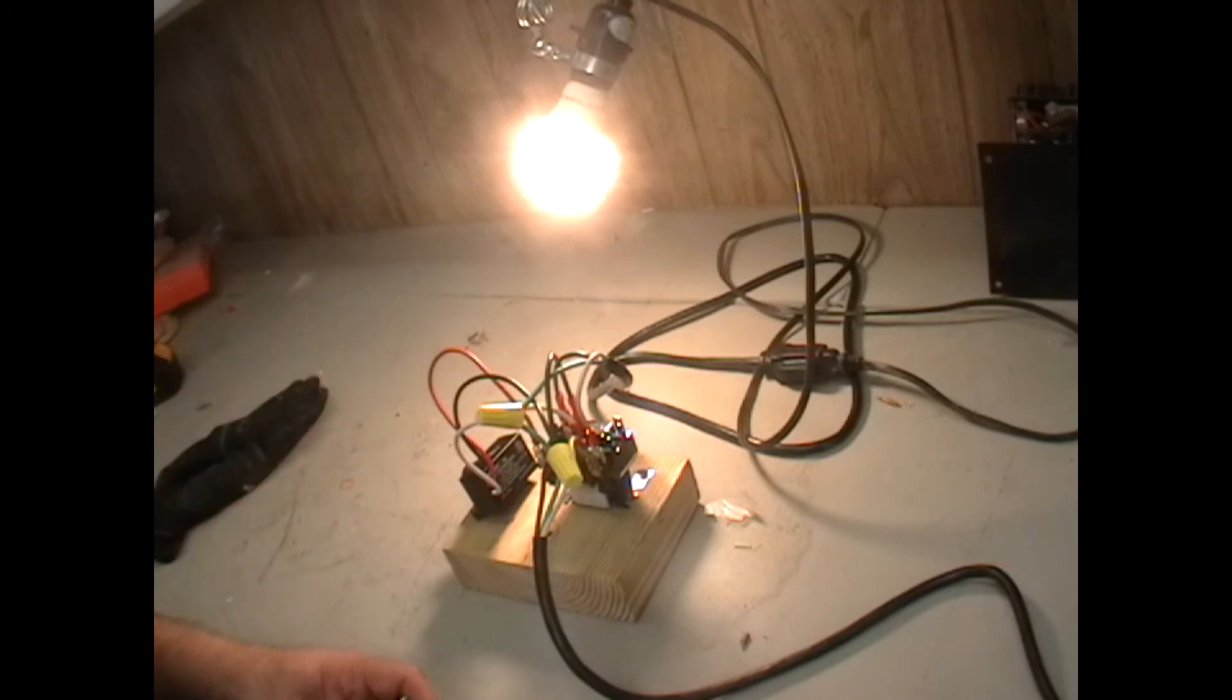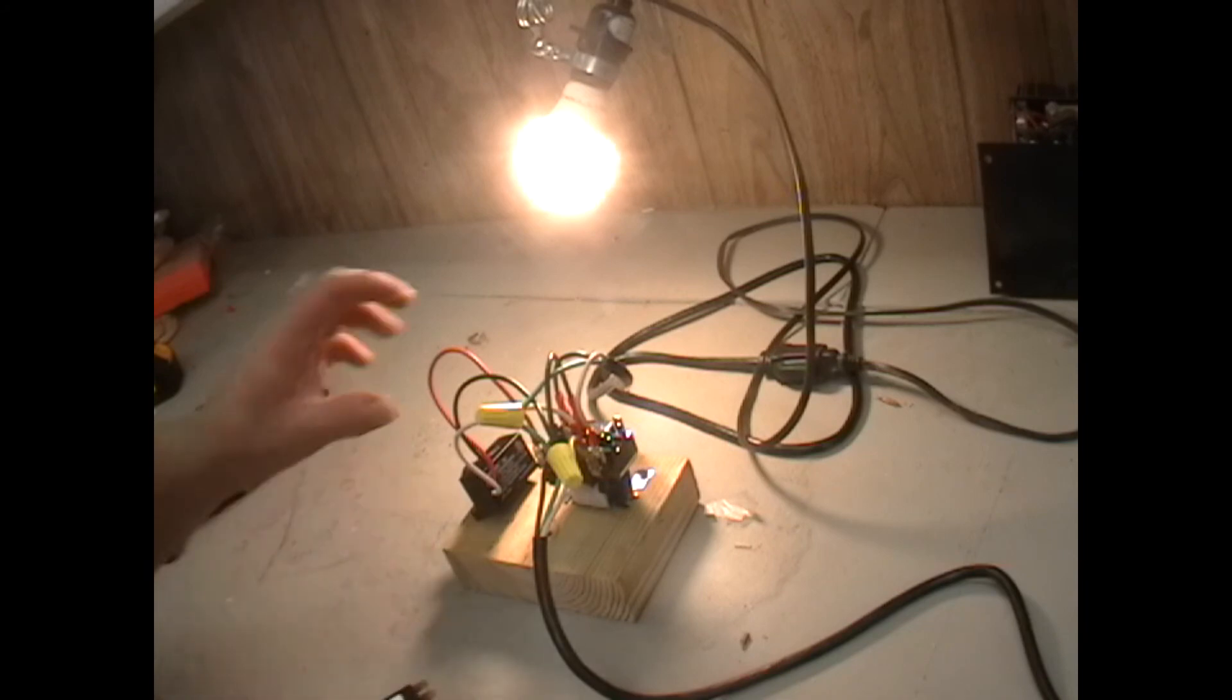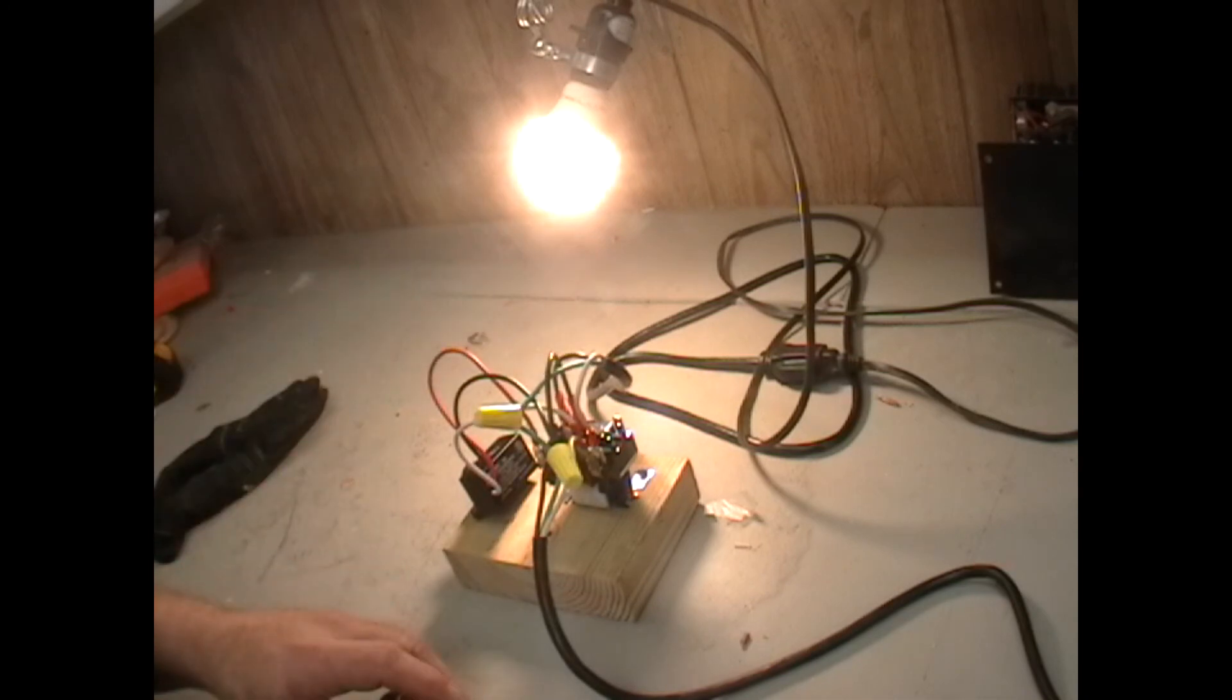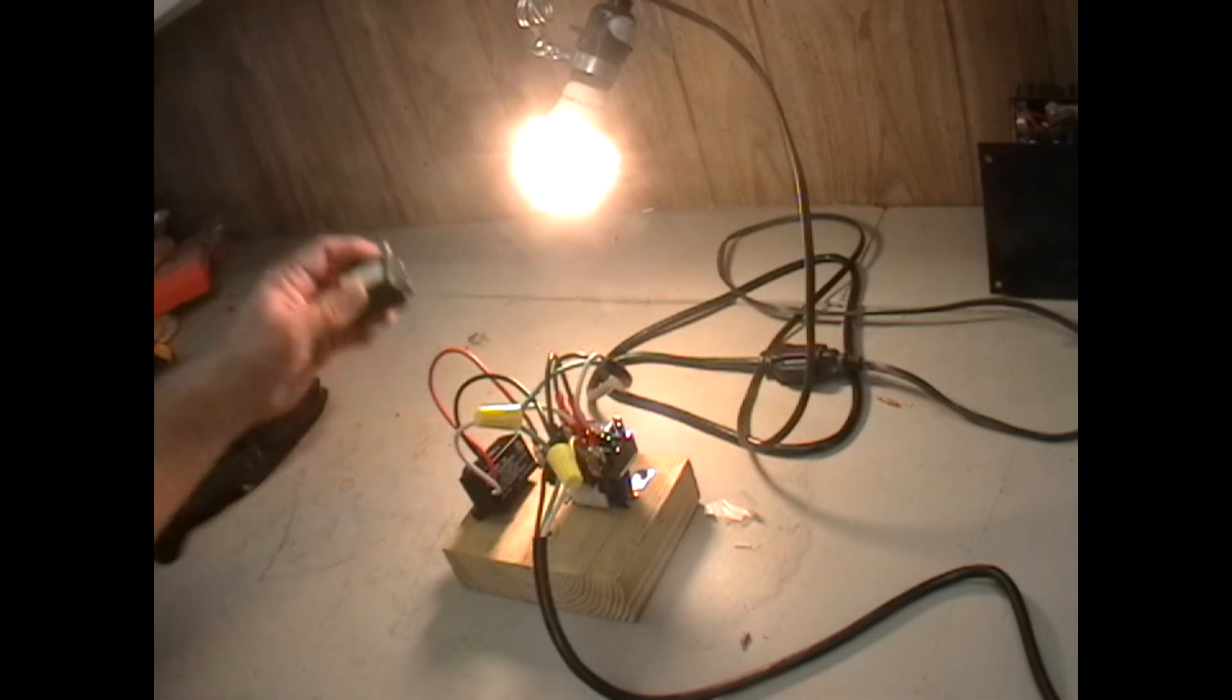So what you could do is use the relay to, like instead of powering this light, you could hook a 120 volt contactor down line from this relay. So this would just power a contactor instead that could carry 30, 40 amps if you needed to do a bigger job with it.